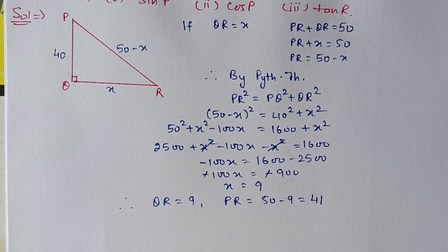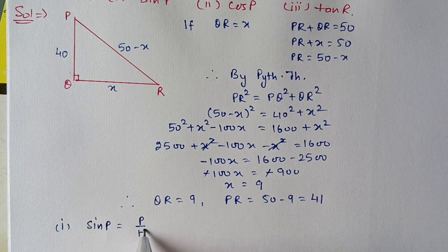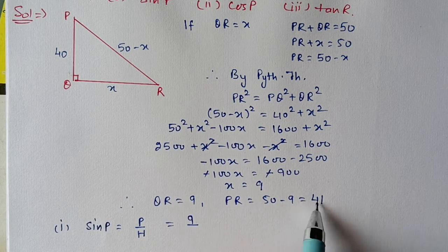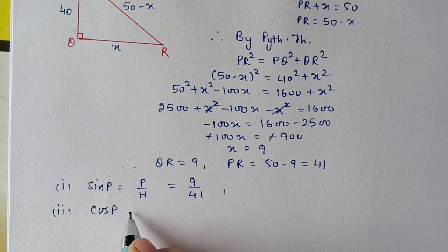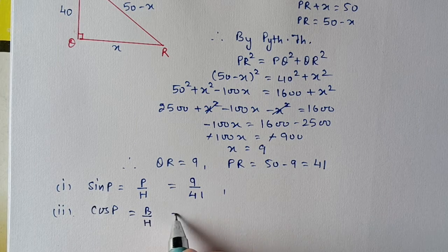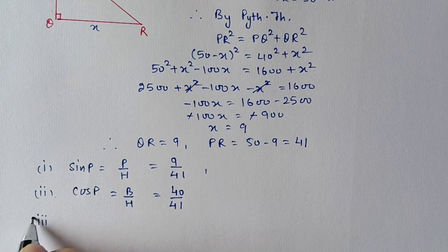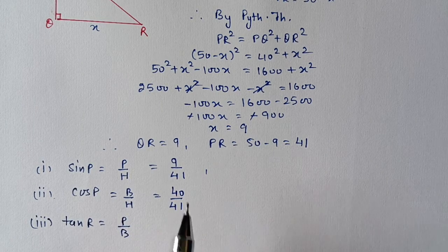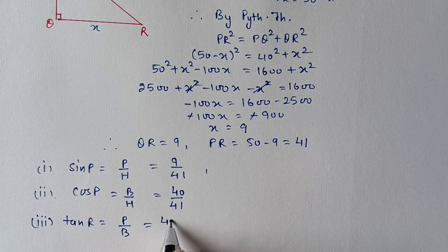Now we find the required ratios. Sin P means perpendicular by hypotenuse. For angle P, perpendicular is QR which is 9 and hypotenuse is PR which is 41, so sin P equals 9 upon 41. Cos P means base by hypotenuse; base for P is PQ which is 40 and hypotenuse is 41. For tan R, perpendicular by base: perpendicular is PQ which is 40 and base is QR which is 9, so tan R equals 40 by 9.